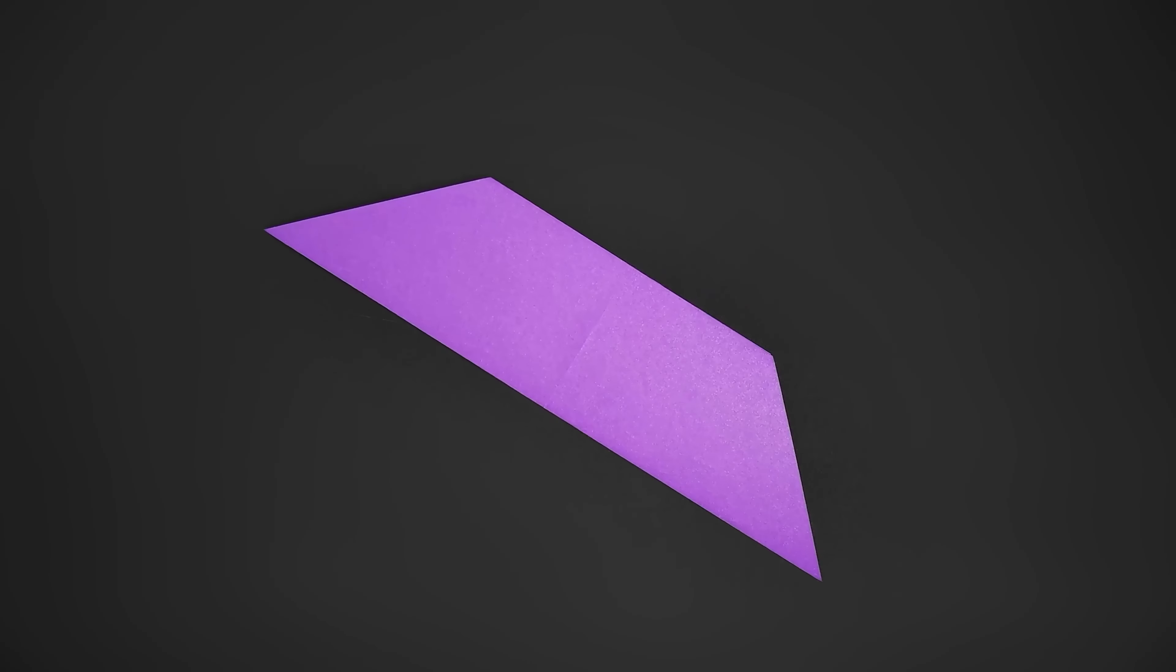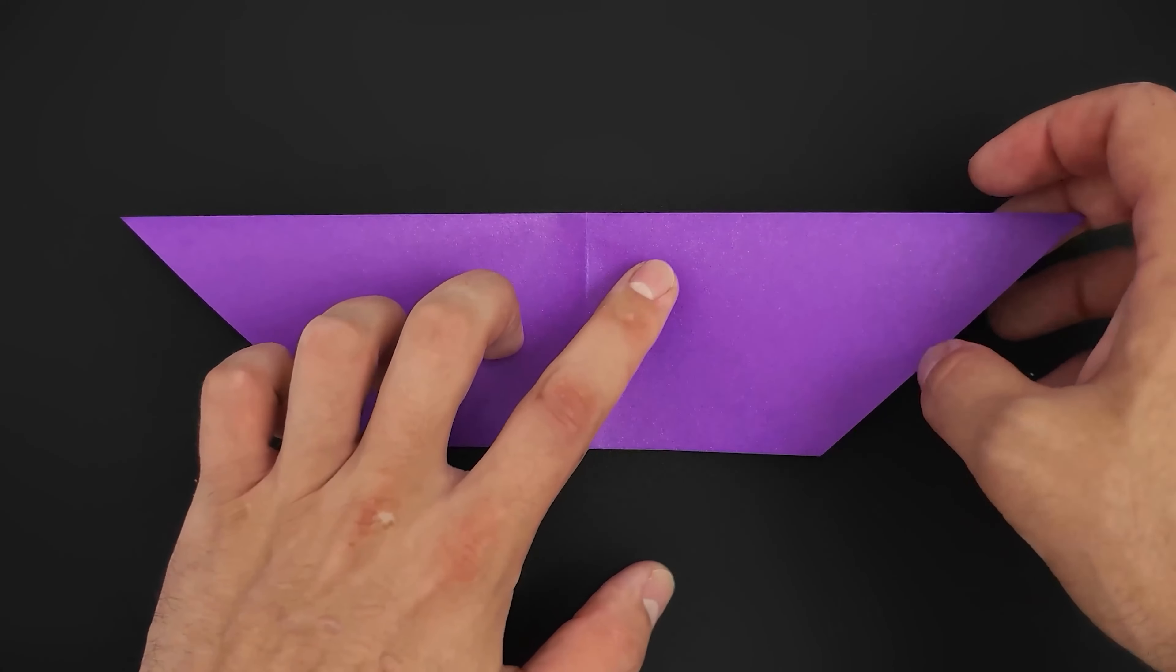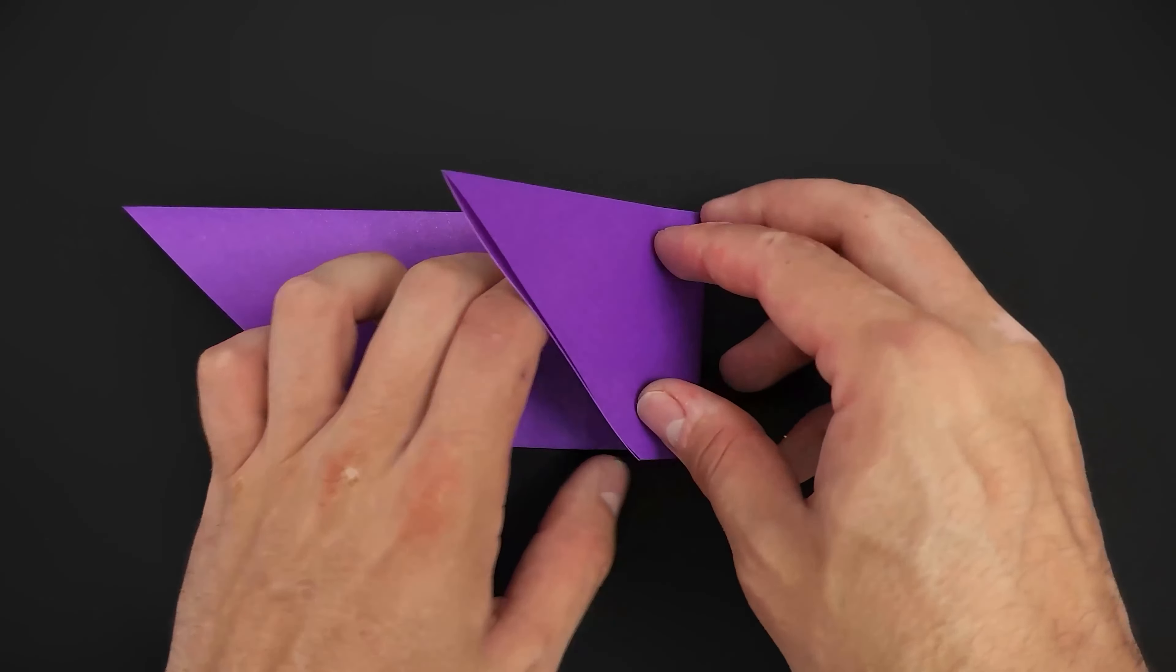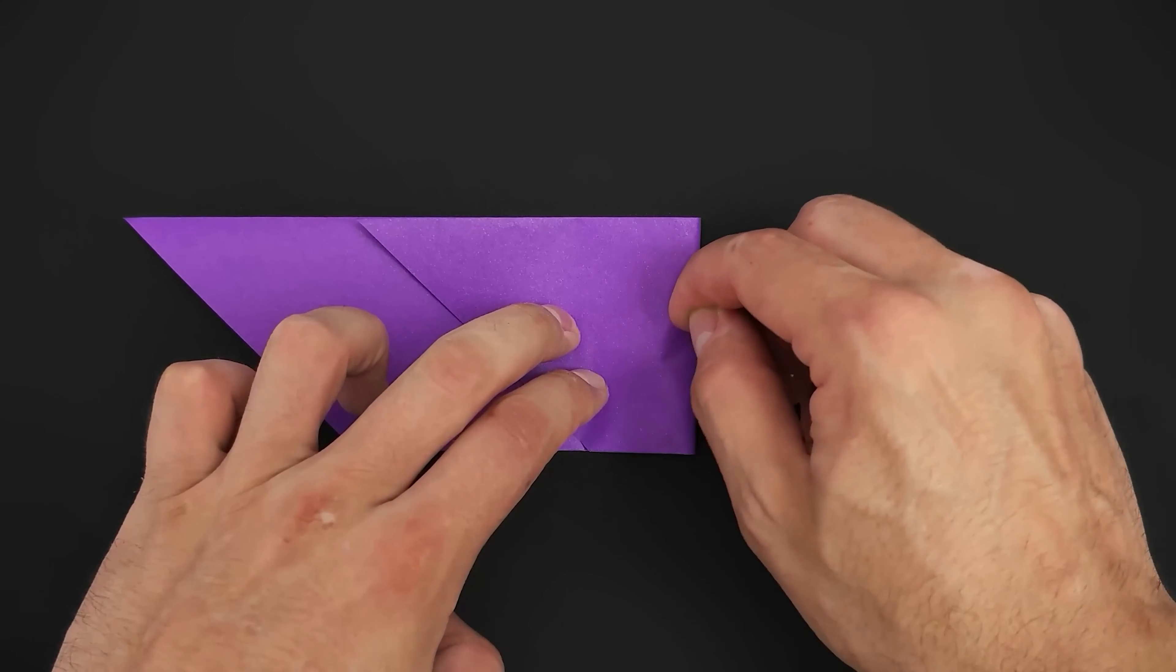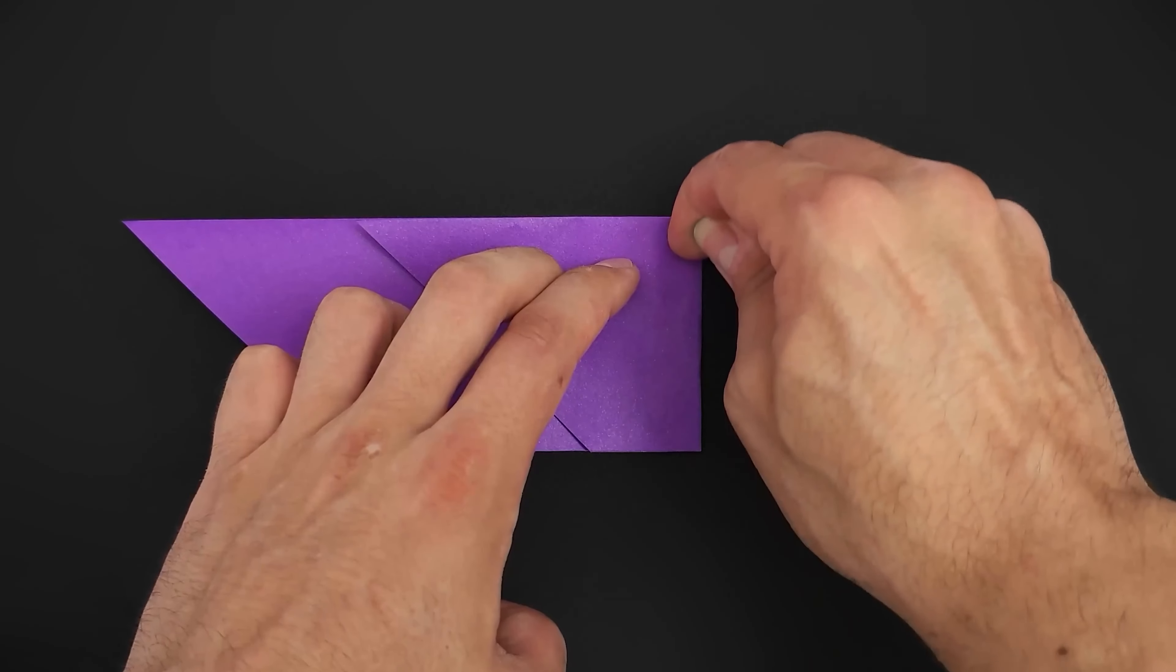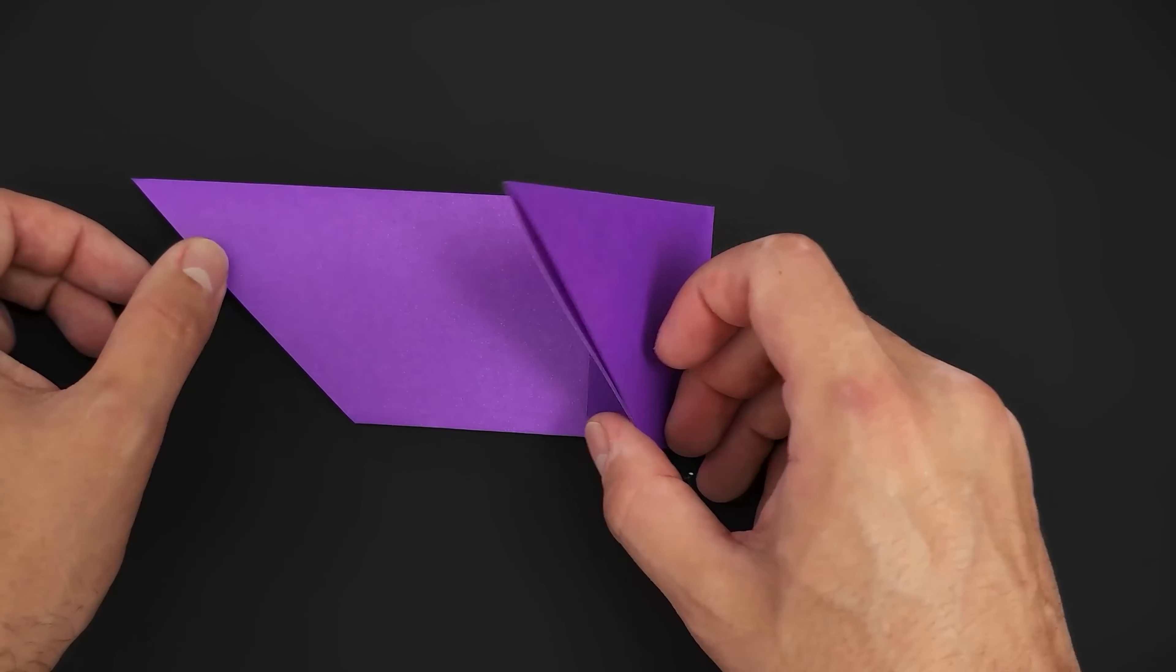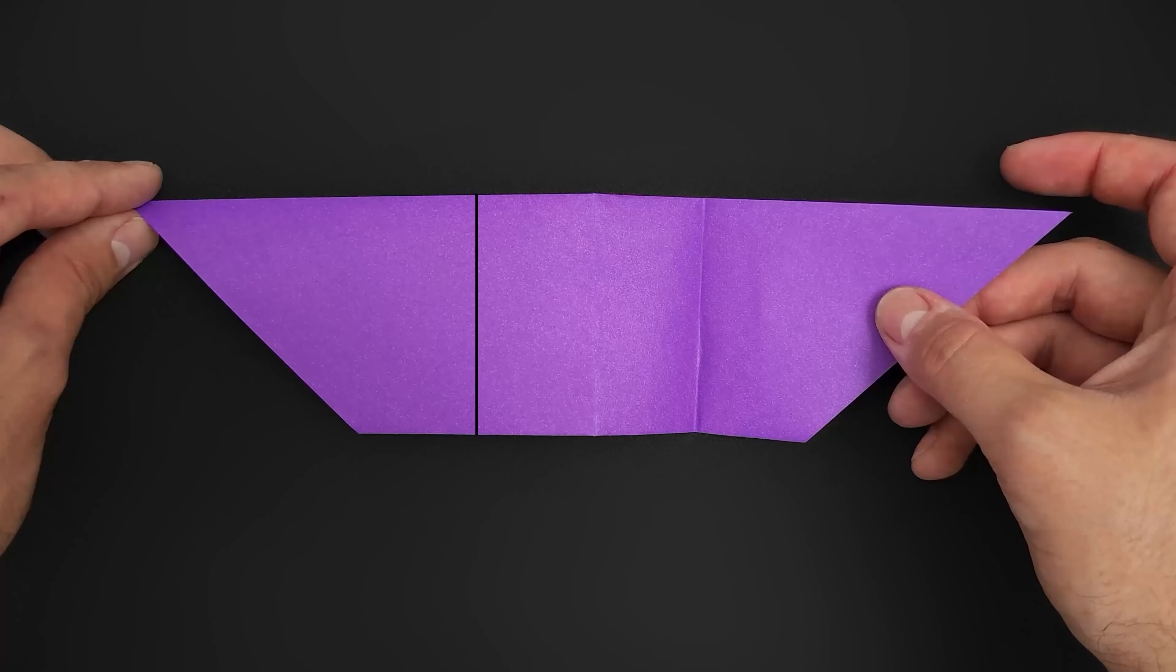Now we turn the paper. And starting on the right side, let's fold the bottom corner to the vertical line in the middle. Make a new crease here. Unfold, and do the same on the other side.